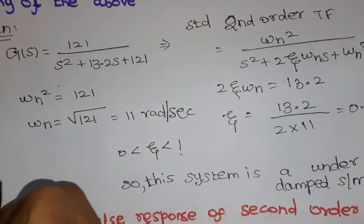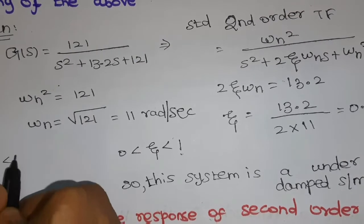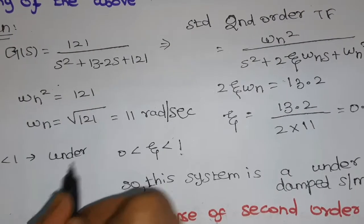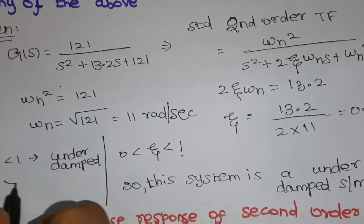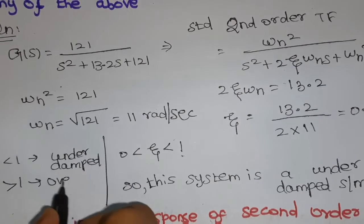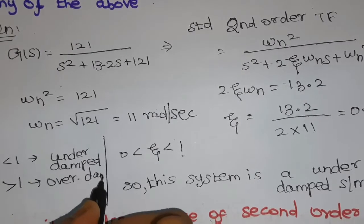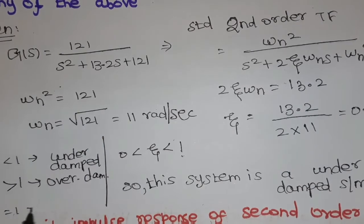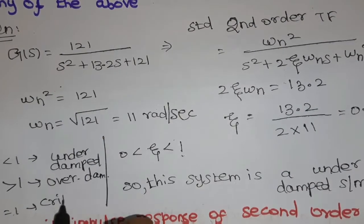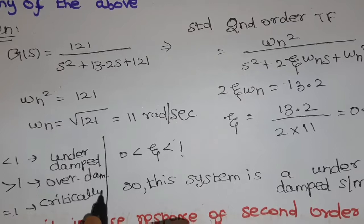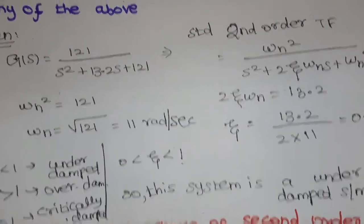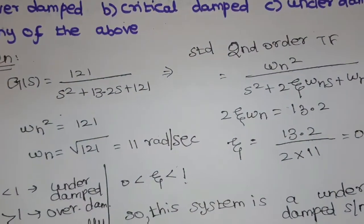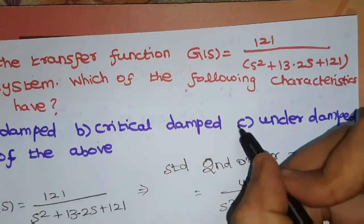To summarize: when zeta is between 0 and 1, the system is under-damped; when zeta is greater than 1, the system is over-damped; when zeta equals 1, the system is critically damped. For this given transfer function, the system is under-damped, so Option C is the correct answer.